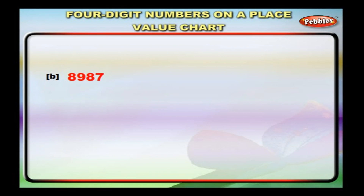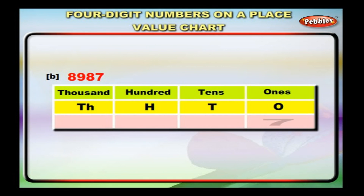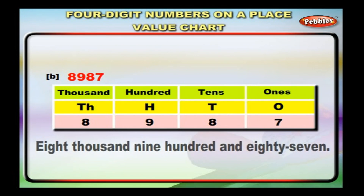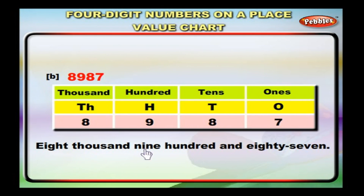Next, we will take eight thousand nine hundred and eighty-seven. Write seven in the ones column, eight in the tens column, nine in the hundreds column, and eight in the thousands column. So, we have eight thousand, nine hundreds, eight tens and seven ones. We write this as eight thousand, nine hundred and eighty-seven.